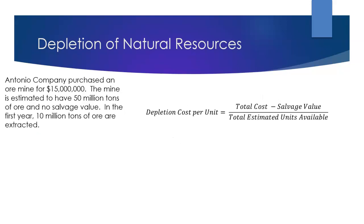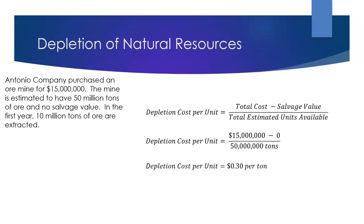First, the depletion cost per unit — that's your total cost minus your salvage value divided by the total estimated units available. We plug in what we have from the problem: we spent $15 million on this mine, it doesn't have a salvage value, and it's estimated to have 50 million tons. So $15 million minus zero divided by 50 million gives us a dollar-per-ton amount. When we do that math, the depletion cost per unit is $0.30 per ton — so each ton extracted depletes the natural resource by 30 cents.